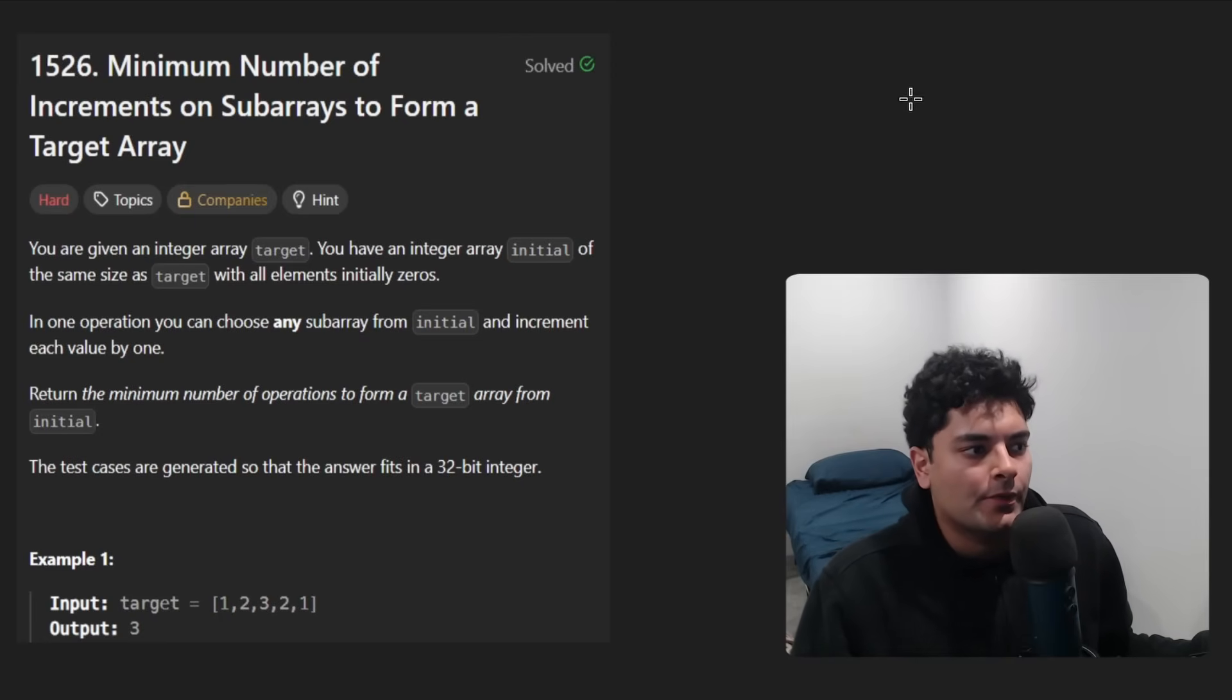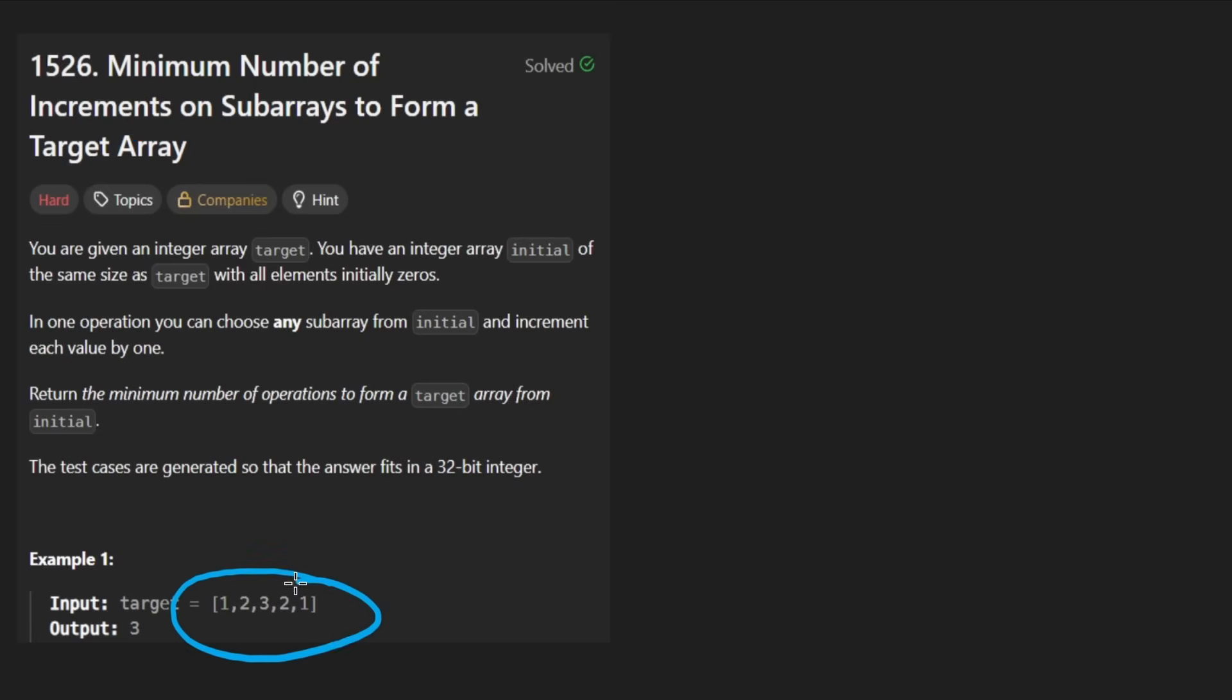Hey everyone, welcome back and let's write some more neat code today. So today let's solve a bit of a more interesting problem, minimum number of increments on subarrays to form a target array. So the idea here is that we're given a target array that we want to form and we're also given an initial array.